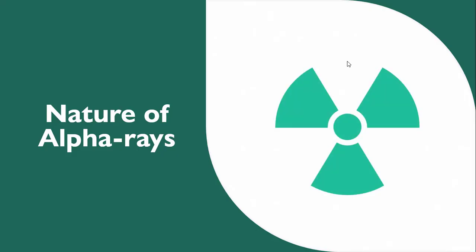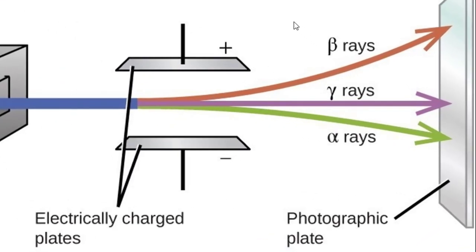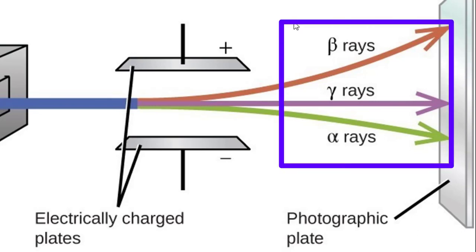First, we will discuss the nature of alpha rays. If we talk about the nature of alpha rays, the deflection of alpha rays in electric or magnetic field is towards the negatively charged plate and this deflection of alpha rays shows that they carry positive charge.